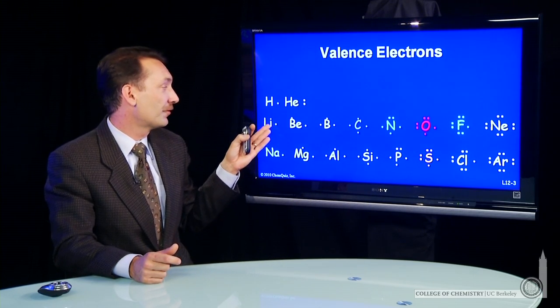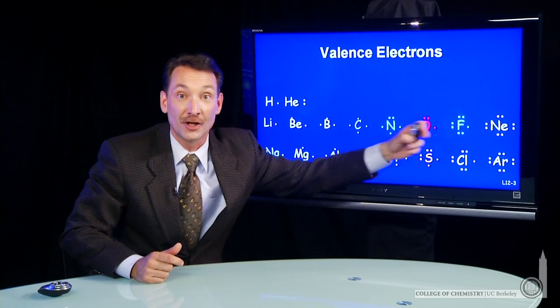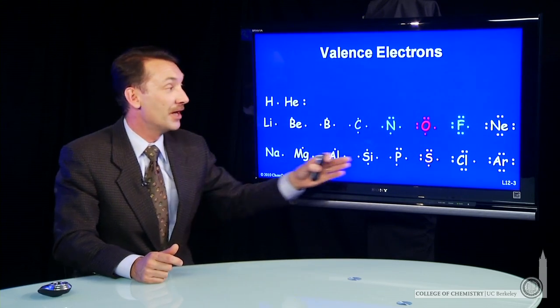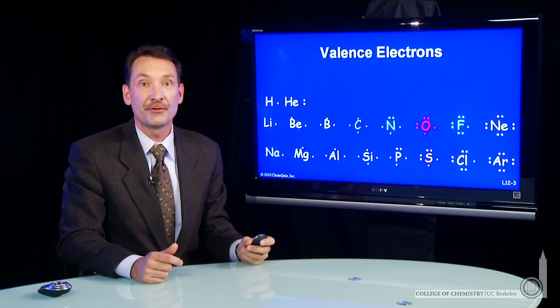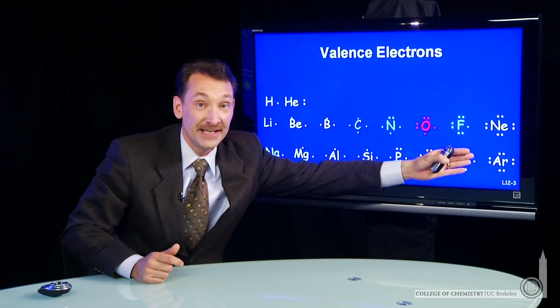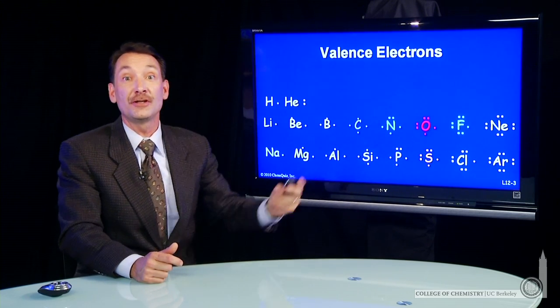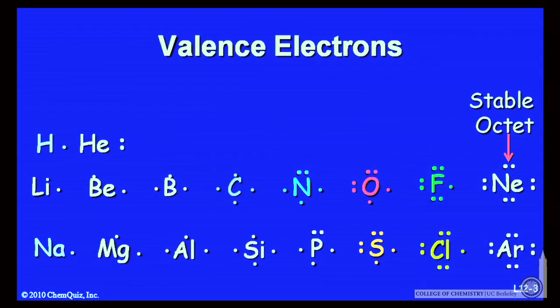So our valence electrons go from 1 to 8 along principal quantum level 2 and from 1 to 8 along principal quantum level 3. And when you get to 8, that's called a full shell. It's a stable octet.